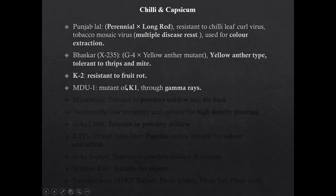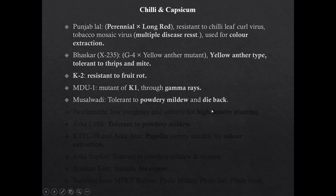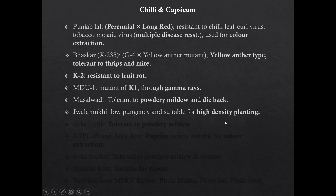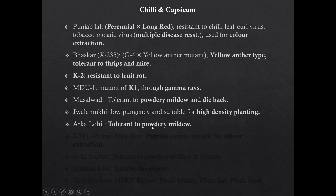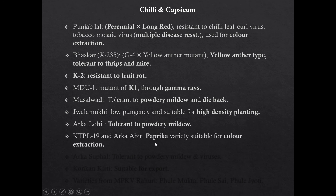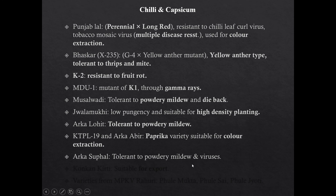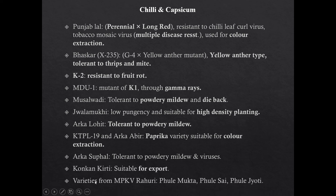Mdu1 is a mutant of K1 developed using gamma rays. Nusal Wadi is tolerant to powdery mildew and dieback. Jola Mukhi is a low pungency variety suitable for high density planting. Arka Lohit is tolerant to powdery mildew. KTPL19 and Arka Abhir are varieties suitable for color extraction and are paprika varieties. Arka Supal is tolerant to powdery mildew and viruses. Honkan Kirti is suitable for export. Varieties from MPKV Rahuri are Phule Mukta, Phule Sai, and Phule Jurti.